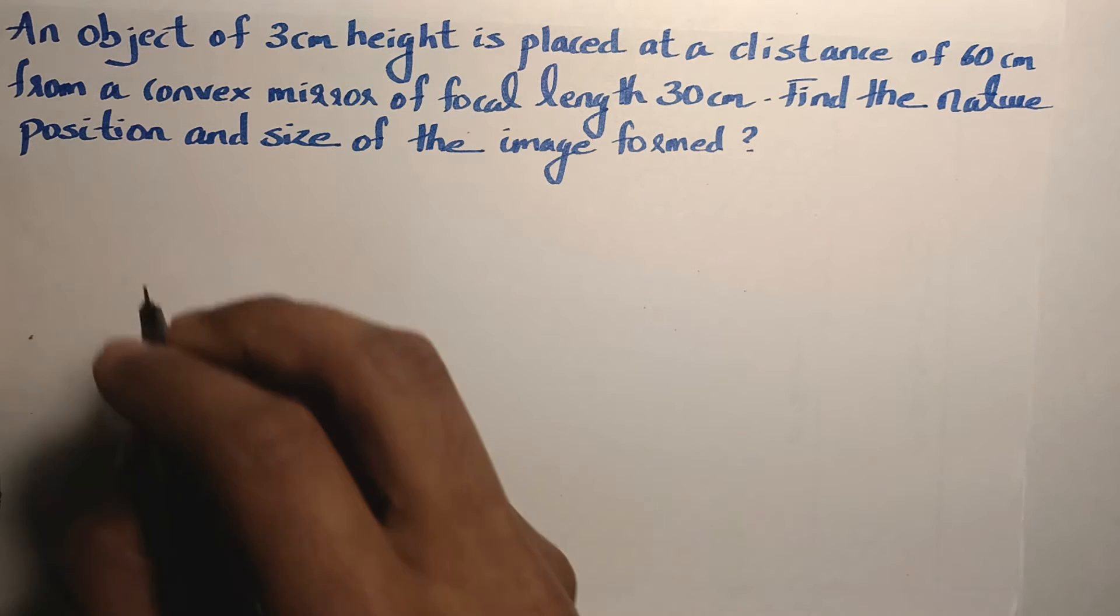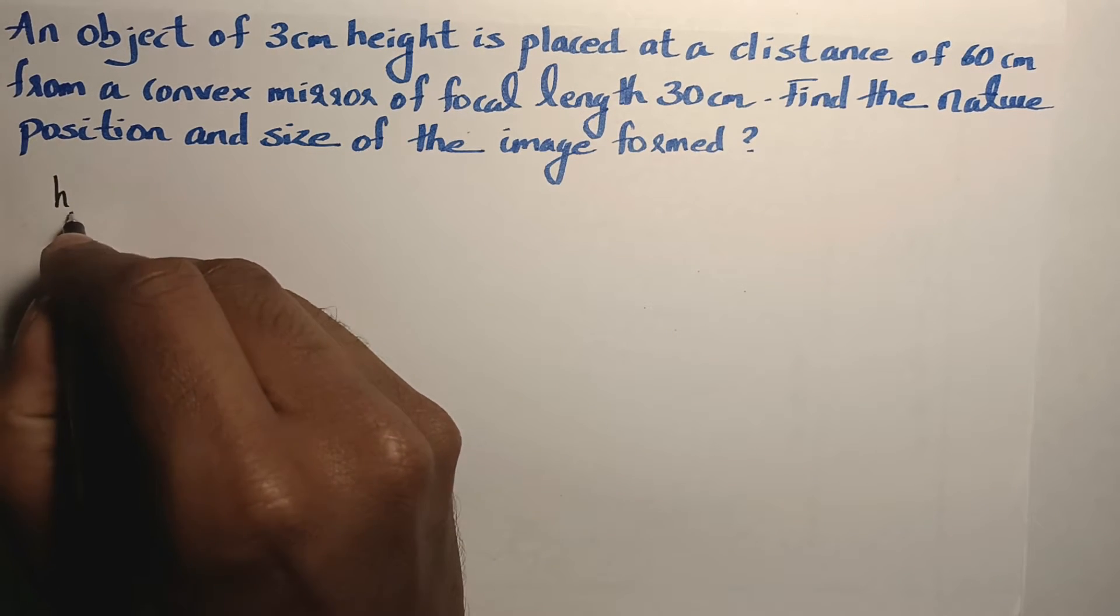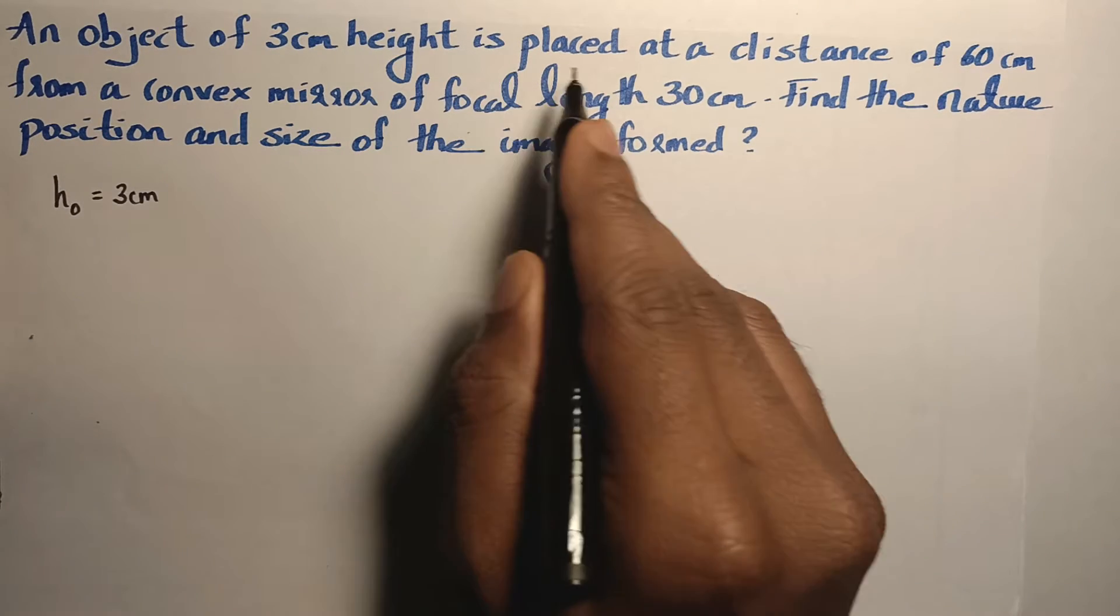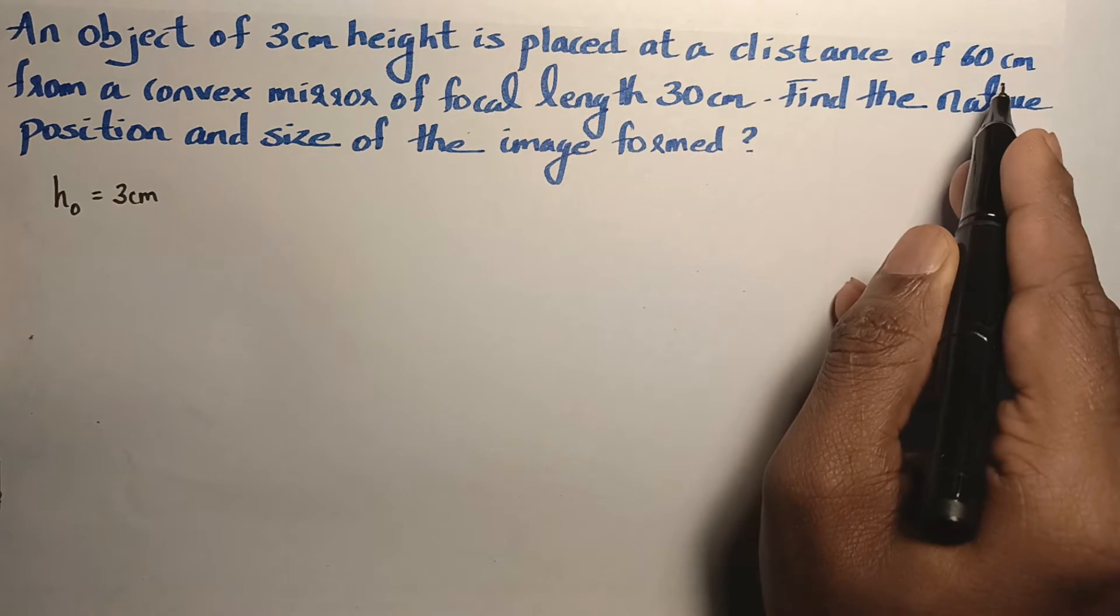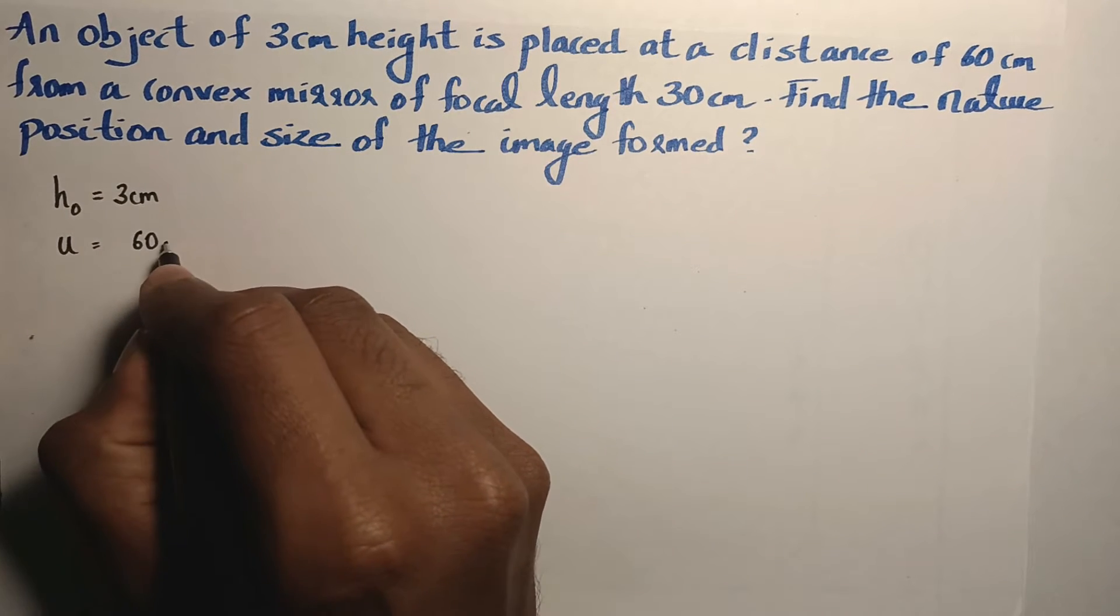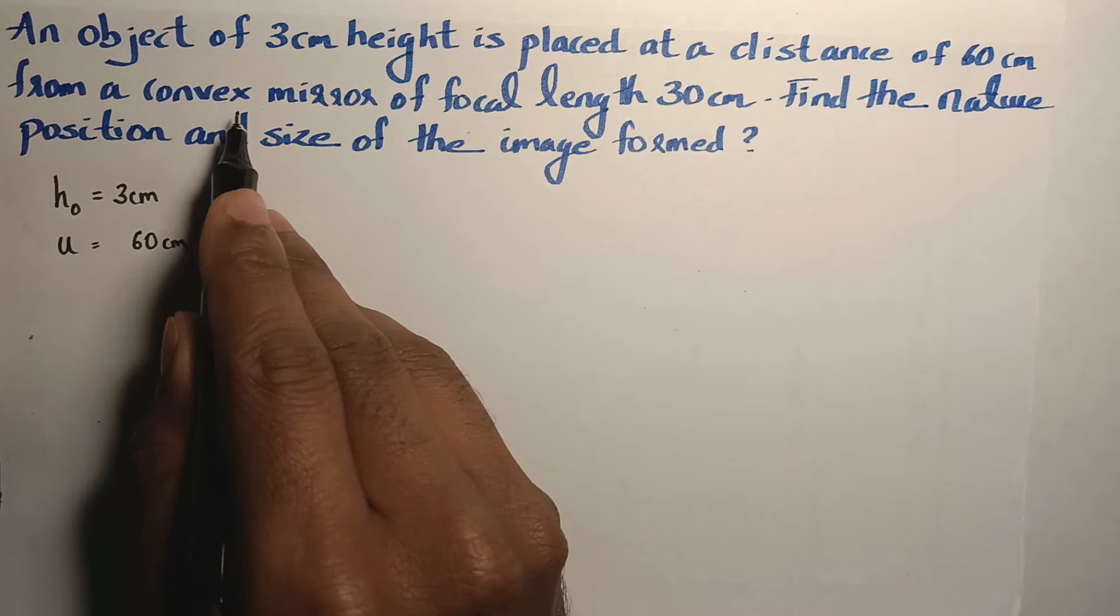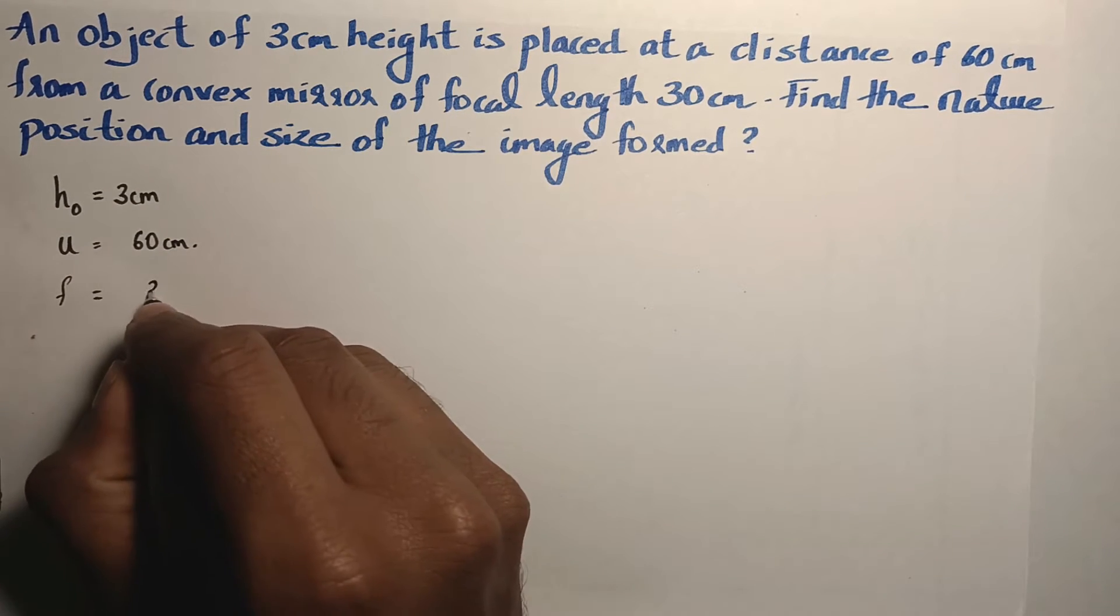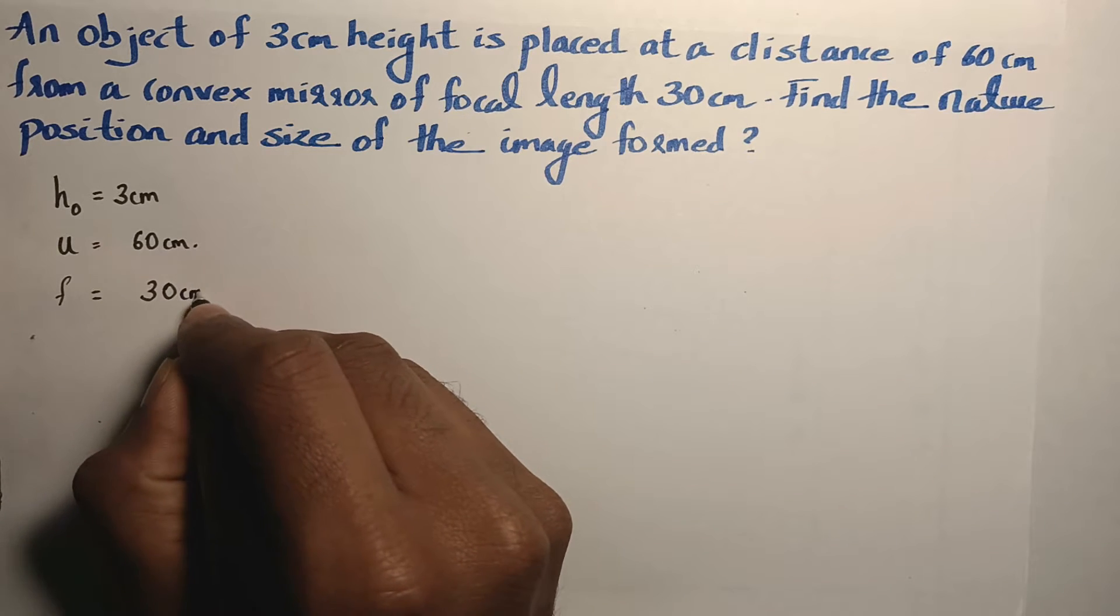An object of 3 centimeter height is placed at a distance of 60 centimeter from a convex mirror of focal length 30 centimeter. The focal length of the given convex mirror is 30 centimeter.